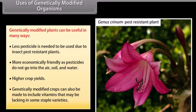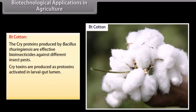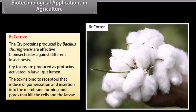Genetically modified crops can also be made to include vitamins that may be lacking in some staple varieties. BT cotton: the cry proteins produced by Bacillus thuringiensis are effective bio-insecticides against different insect pests. Cry toxins are produced as protoxins, activated in the larval gut lumen. The toxins bind to receptors that induce oligomerization and insertion into the membrane, forming ionic pores that kill the cells and the larva.